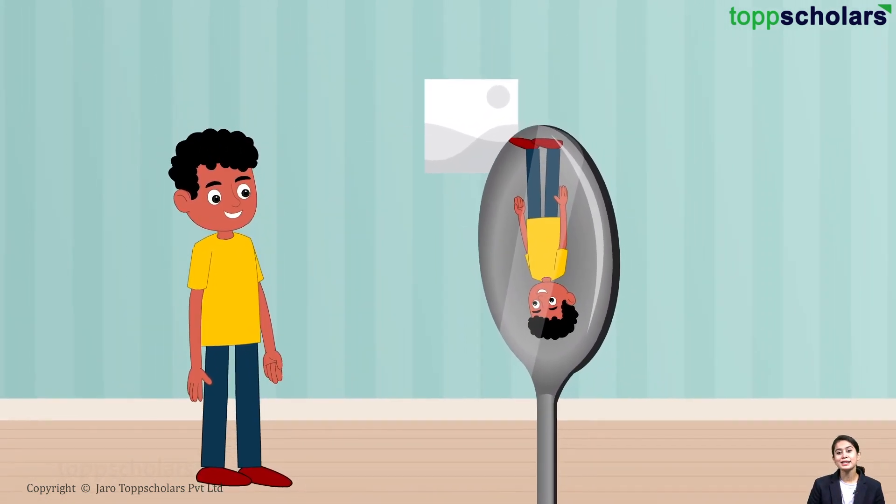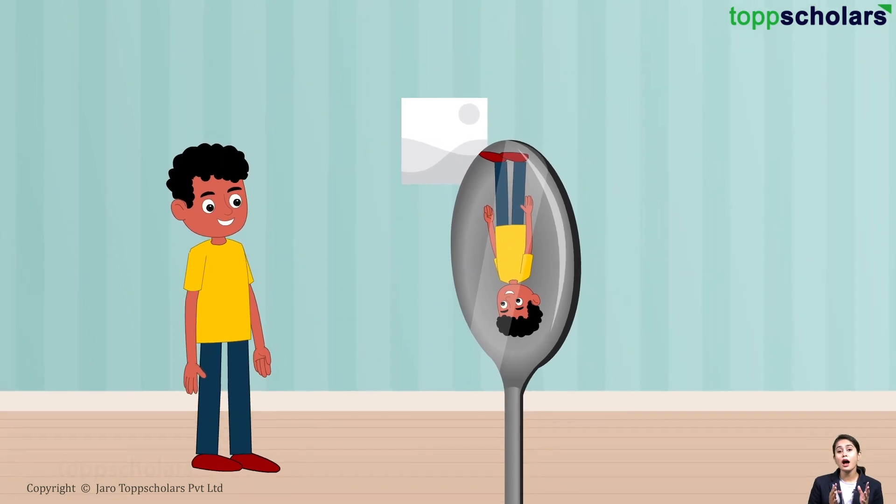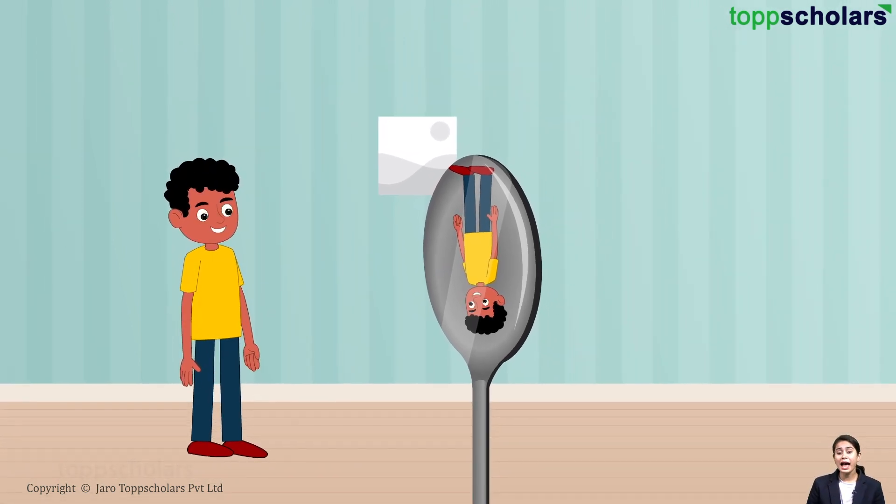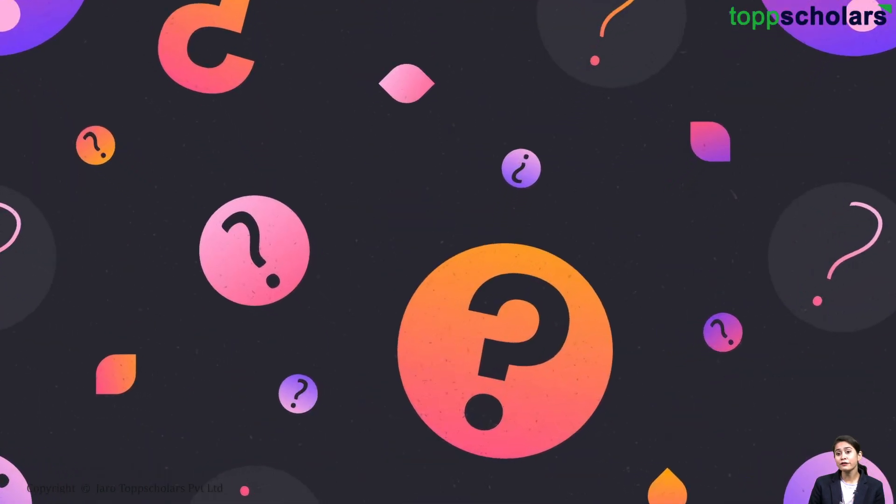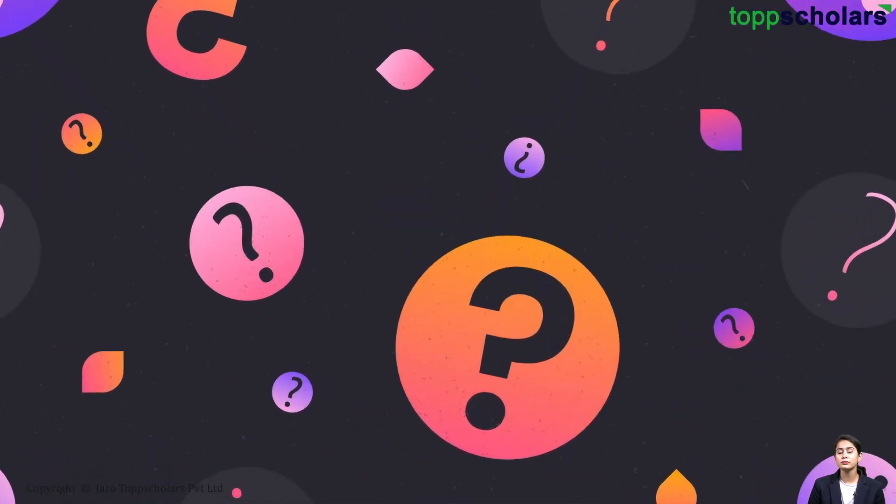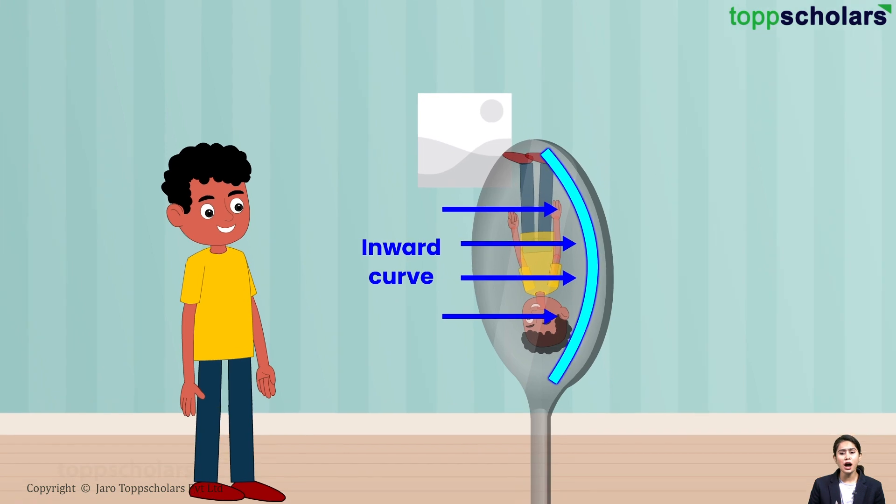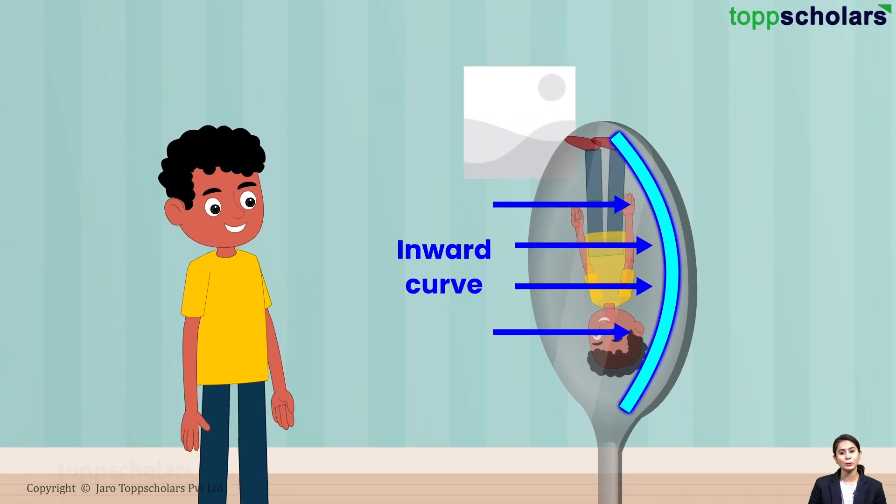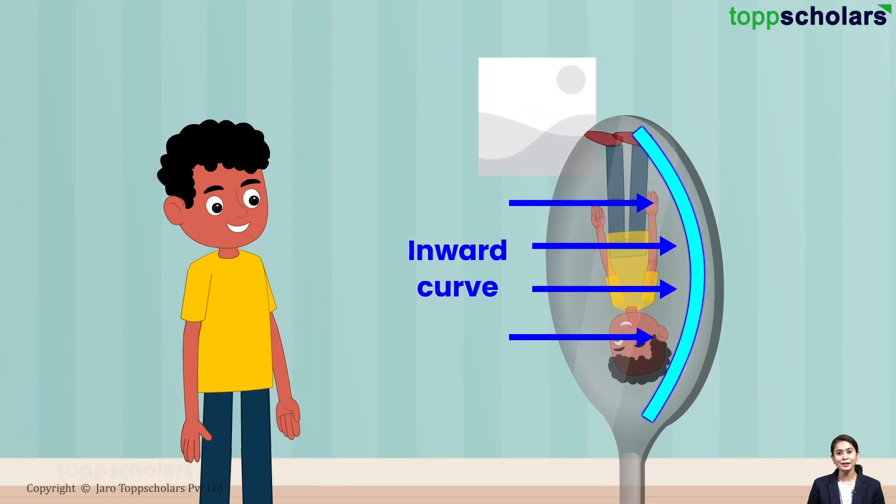That's right! Your image appears upside down in a spoon. But have you ever thought why is your reflection upside down in a spoon? This is because of the sharp inward curve of the spoon. Let's see the science behind this.